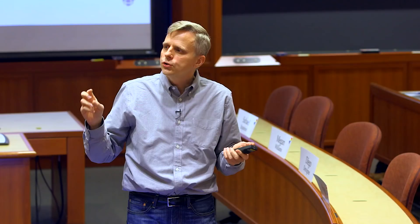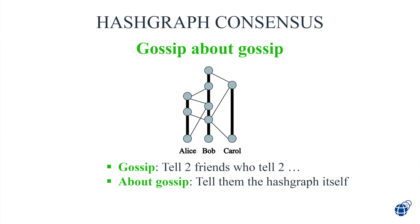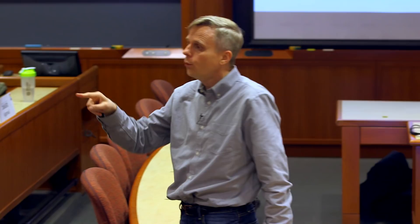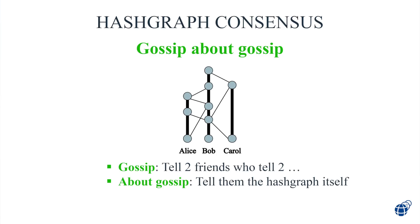We started with gossip — the fastest way to get transactions out. We added a tiny bit of overhead and for free got the whole hash graph showing the entire history of how we've all talked. Now I know what you know, and I know what you know about what she knows, and when you learned what you know about when he learned from him. Each circle has a timestamp in it.